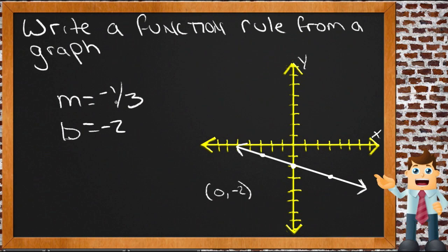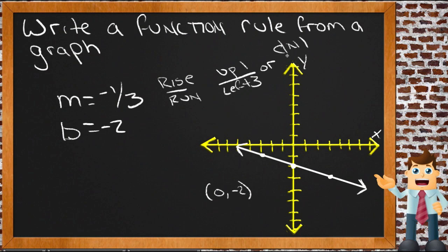Now the other thing we know, you said that your slope was negative one-third, so that means the slope is rise over run. Your line either goes up one and then back or left three, or it goes down one and right three.